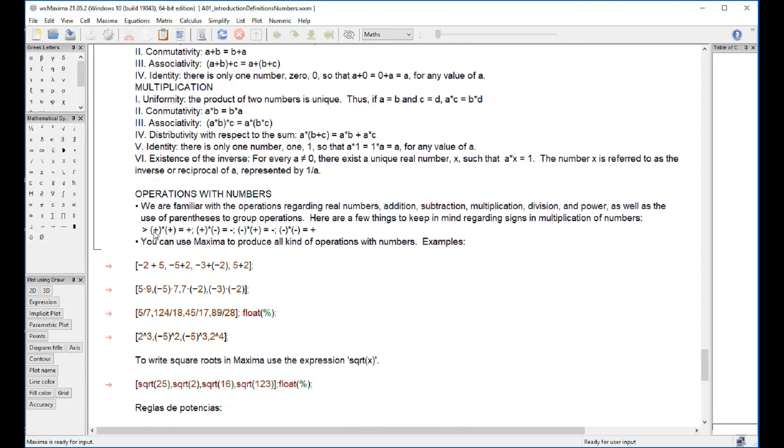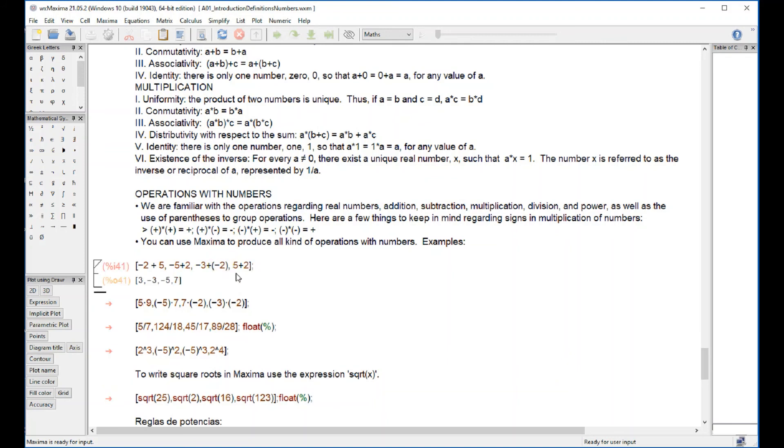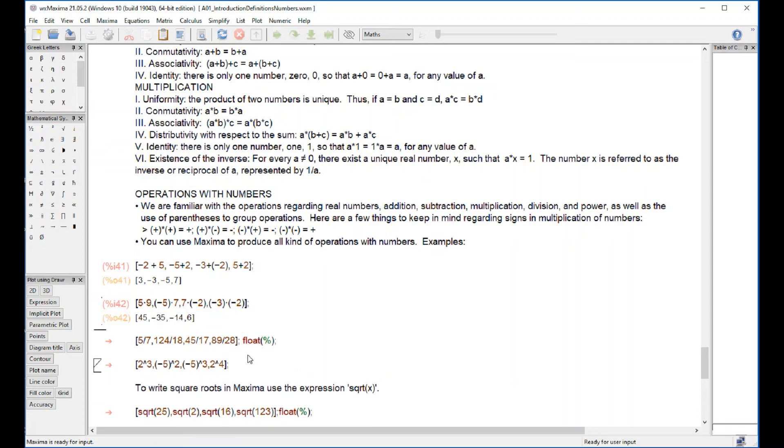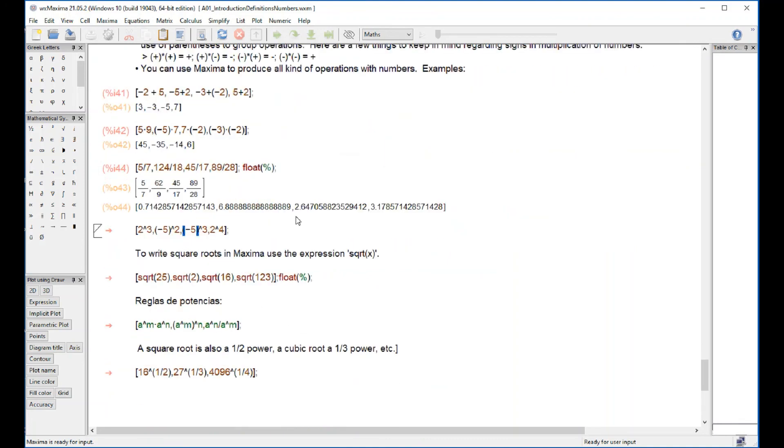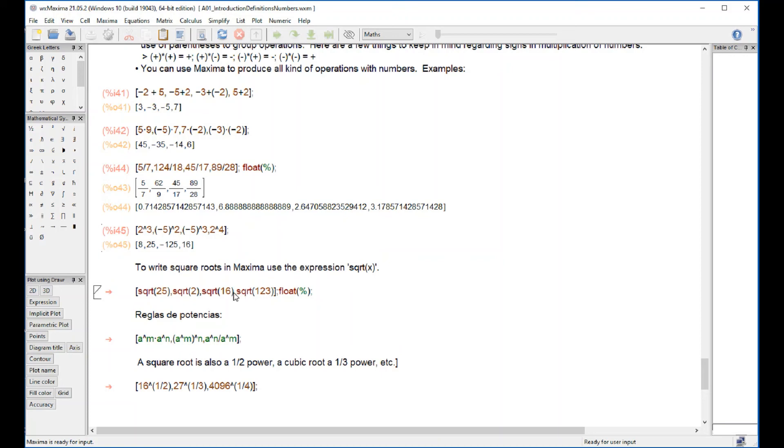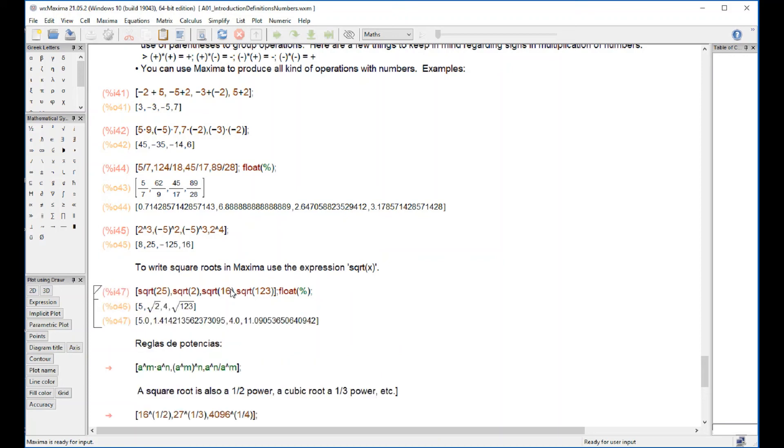You may remember the fact that multiplying positive numbers gives you positive, positive-negative or negative-positive gives you negative, and two negative numbers give you positive. Here I have examples of those operations with numbers. These are additions and subtractions. These are products. Divisions will produce the fractions, and if you want to see them as decimals use float or floating point. These are powers.